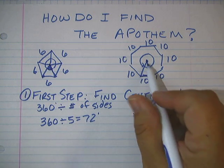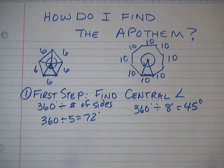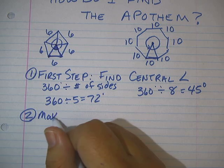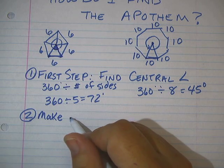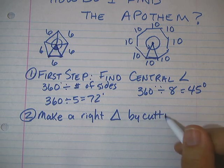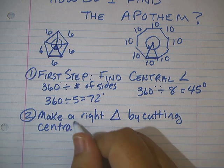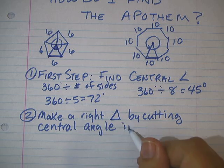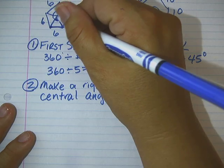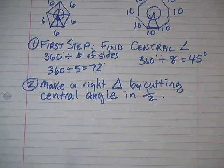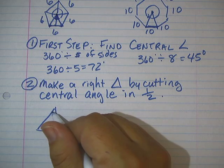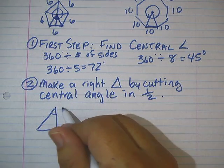The second step we have is we make a right triangle by cutting this triangle in half. So make a right triangle by cutting central angle in half. And the reason I'm doing that is the apothem connects the center to the side. It cuts this side in half. So I'm trying to get to this apothem side. So I'm going to go ahead and draw a triangle here. This angle right here, if it was 72 degrees, it's not 72 degrees anymore. It's 72 divided by 2, which is 36 degrees. So that's 36 degrees. For this one, it was 45, so now it's even smaller.